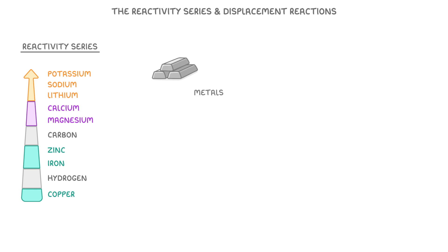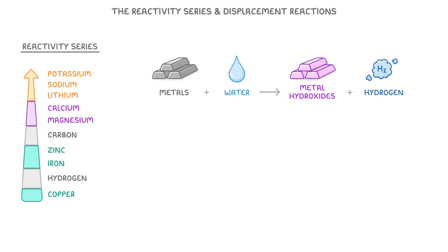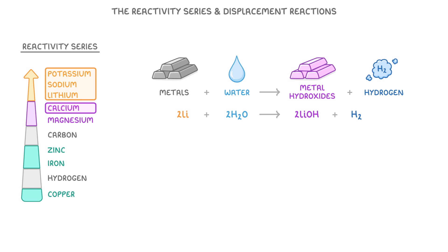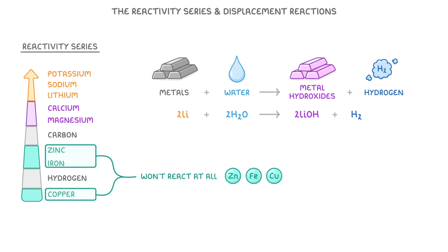Now if we instead react metals with water rather than acids, they form metal hydroxides and hydrogen. For example, lithium plus water would go to form lithium hydroxide and hydrogen. However, only the most reactive metals are reactive enough to do this. Zinc, iron and copper won't react at all, while magnesium will only react very slightly.